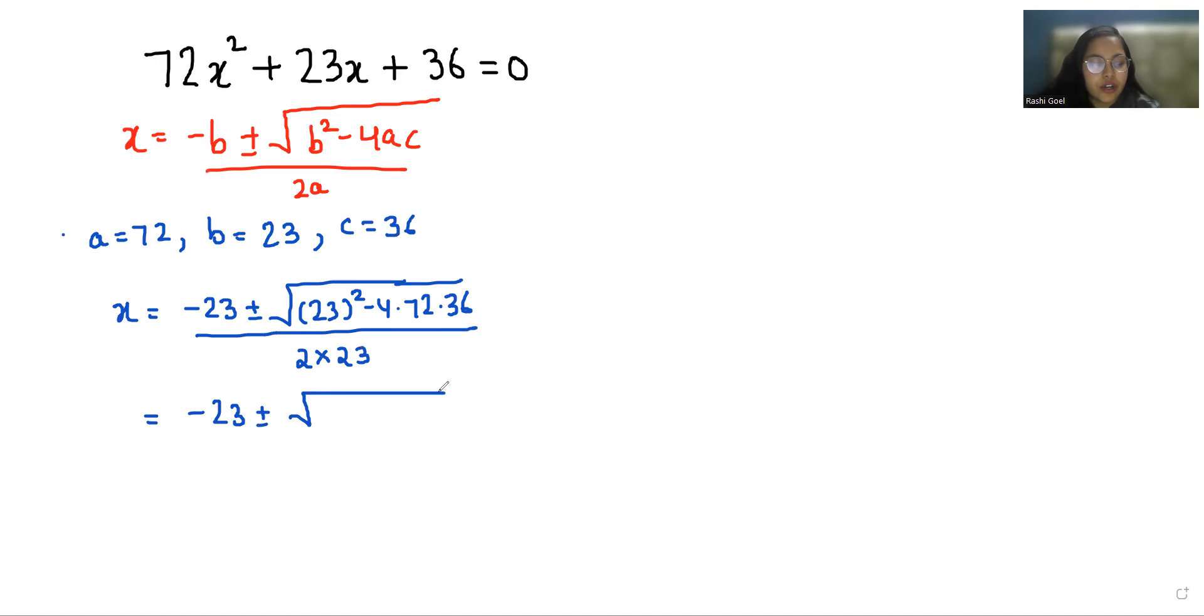So 23 square is 529 and 4 times 72 times 36 is 10,368 by 2 times 72, that is 144.